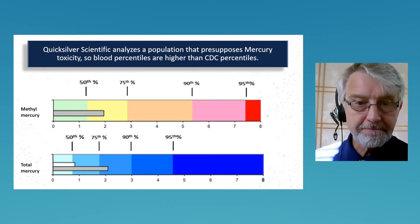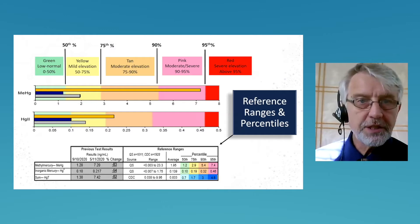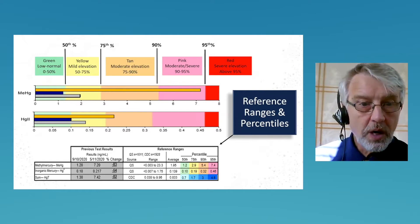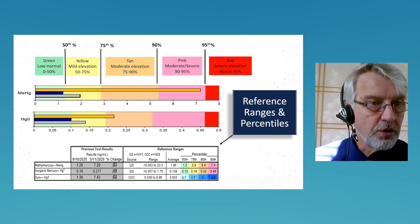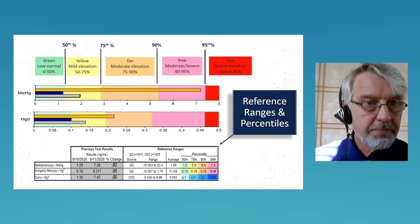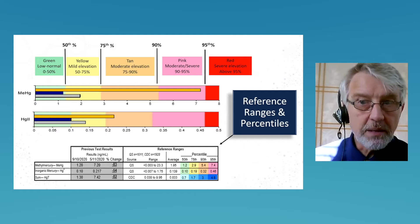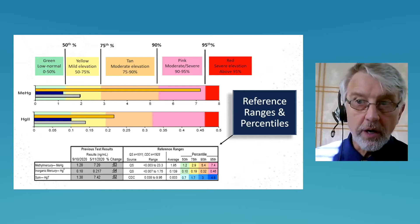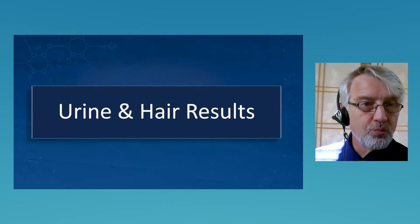On page two of your results, you'll see a graphic representing one way to think about relative toxicity of each form. The green zone up to the 50th percentile is considered low to normal; yellow is mild elevation; tan is moderate; pink is moderate to severe; and red is severe. When you're first starting, you can use that for quick and easy reference, but we'll go into a little more detail shortly.